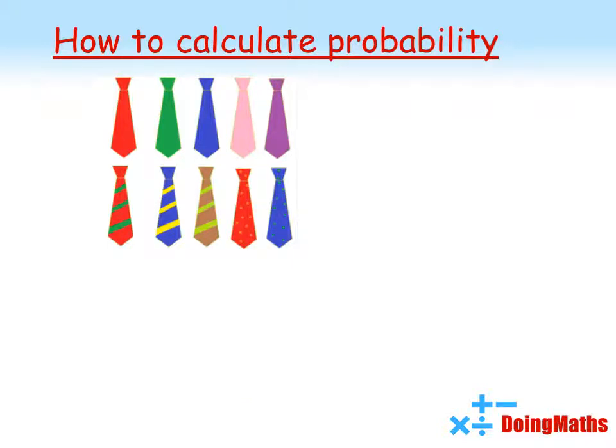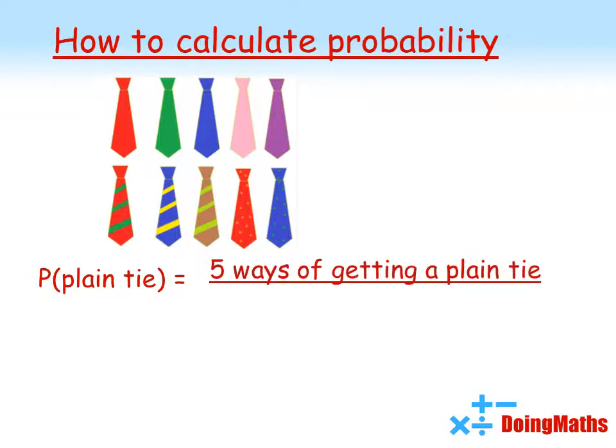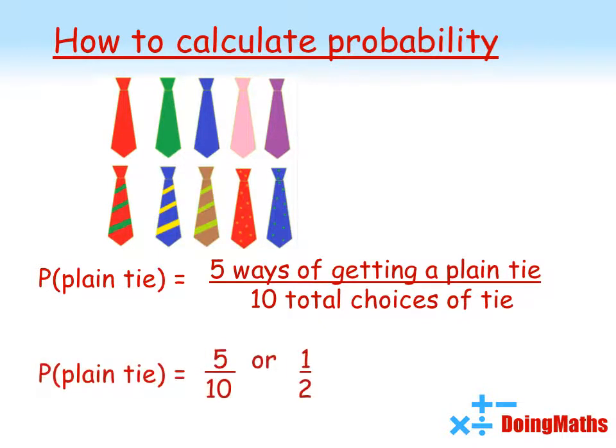Sticking with the tie example, let's have a look at what is the probability of me picking out a plain tie. So we're going to think of it in the same way again. There are five ways of getting a plain tie. I could get the red, green, blue, pink or purple tie. There are still ten ties in the wardrobe. So my probability is five over ten, which can be simplified to a half.